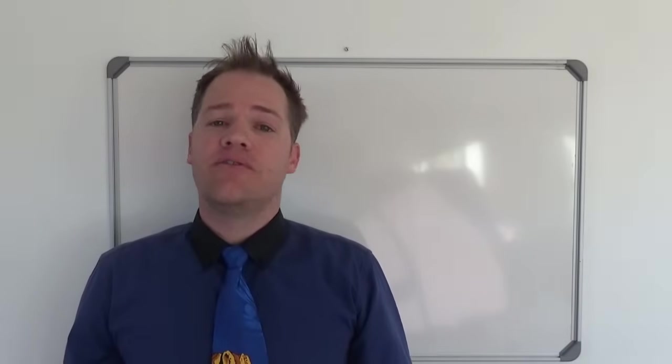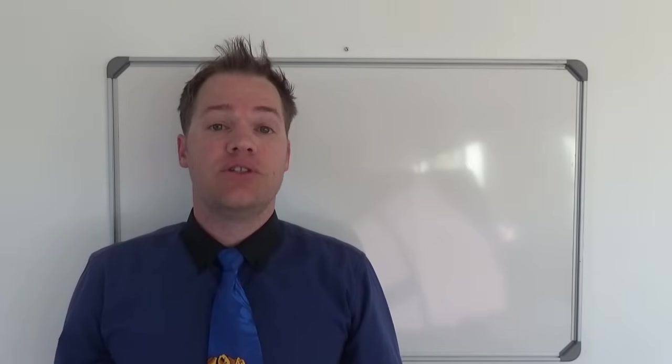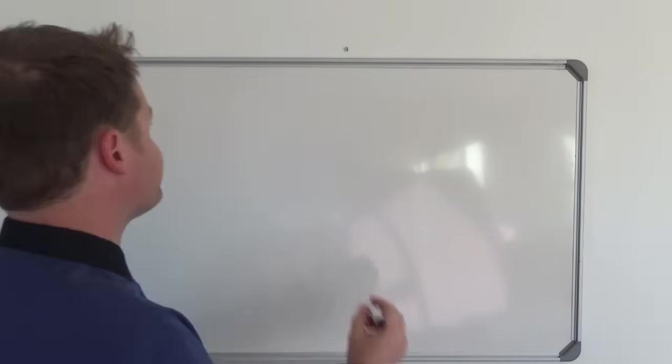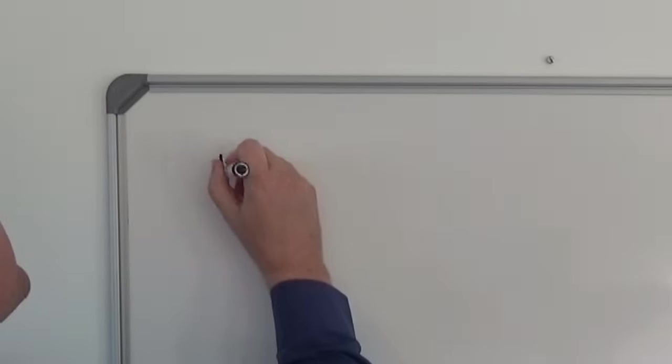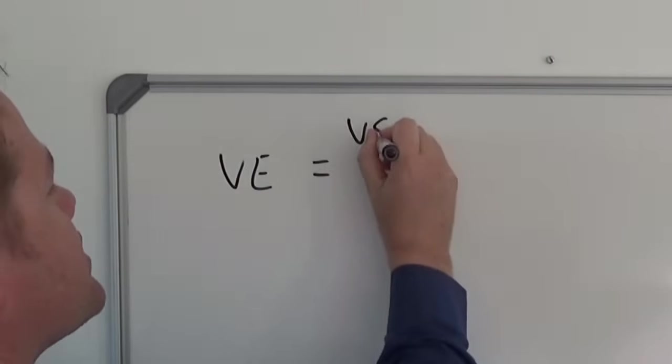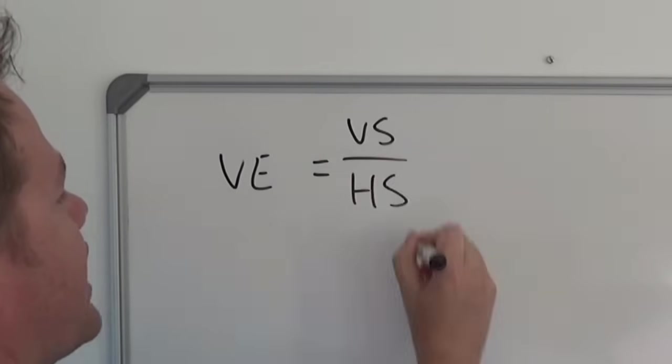So when we calculate vertical exaggeration, it's important to memorize the formula and the formula is the following: Vertical exaggeration equals vertical scale over horizontal scale.